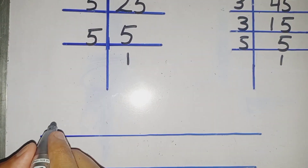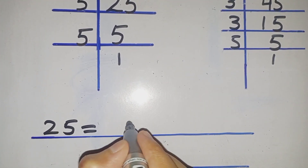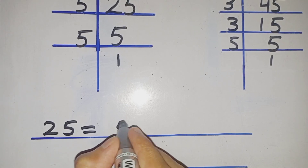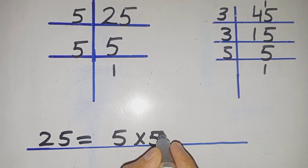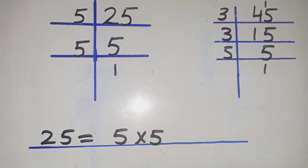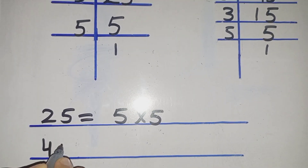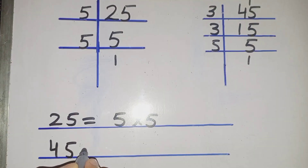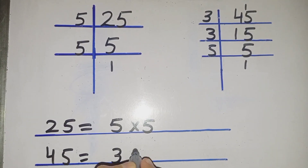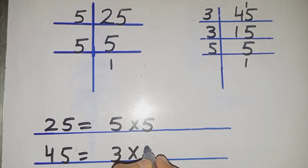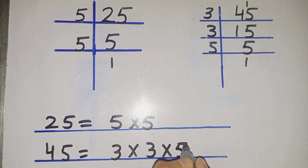25 is equal to 5 multiply by 5. 45 is equal to 3 multiply by 3 multiply by 5.